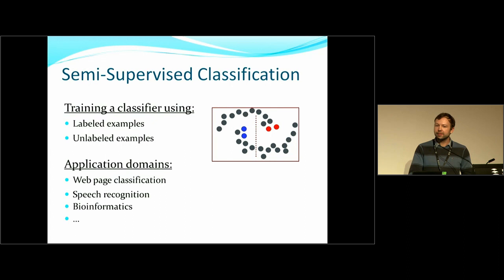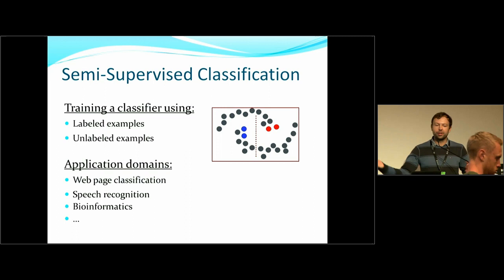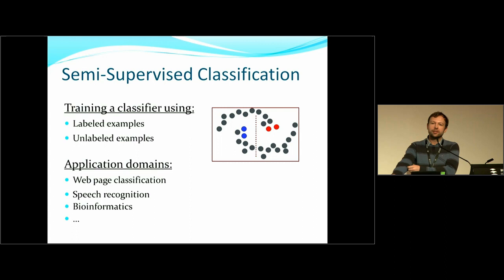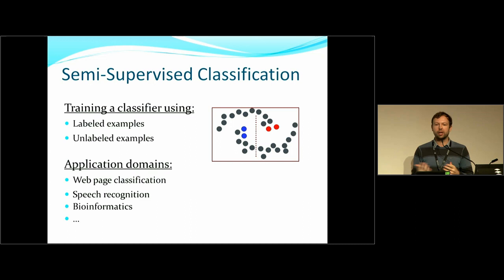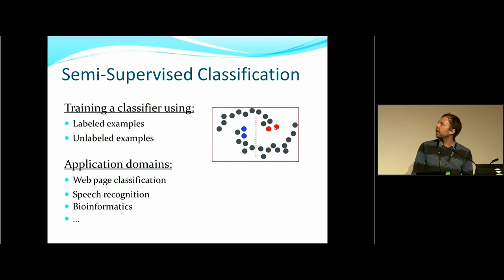The first thing I want to talk about is what semi-supervised classification is. Many of you may know, others maybe don't. The idea is: supervised, unsupervised — semi-supervised is somewhere in the middle. You have some instances that are labeled and others that are not. Instead of only using your labeled instances, the unlabeled instances can also tell you something about the feature space that is useful.